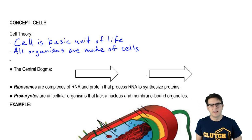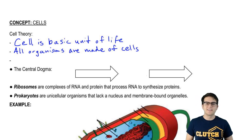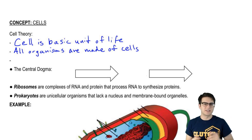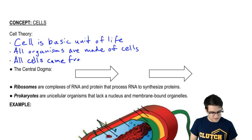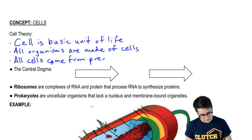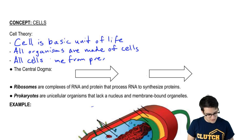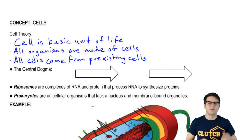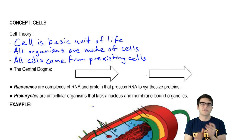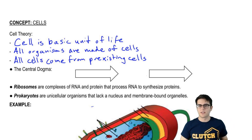The last tenet of cell theory has to do with cell division. This is the idea that all cells come from pre-existing cells. This means that cells don't just appear when you put the right ingredients together — cells actually have to come from other cells. And this occurs through cell division, a process we're going to talk about in detail in later videos.